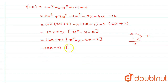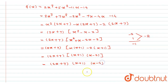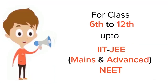From x² + x − 2x − 2, I take x common from the first pair to get x(x + 1), and −2 common from the second pair to get −2(x + 1). Taking (x + 1) common gives (x + 1)(x − 2). Therefore, the complete factorization is (2x + 7)(x + 1)(x − 2).